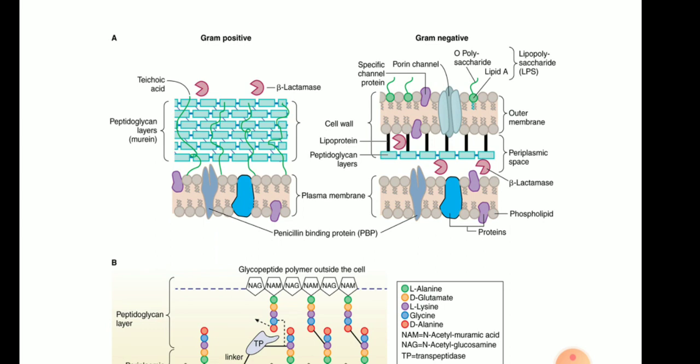Whereas in case of gram negative there is the presence of porin channels and a lipopolysaccharide structure is there at the very beginning so it's very difficult for penicillin-like drugs to penetrate the outer membrane.